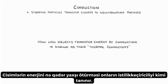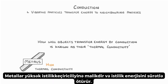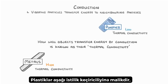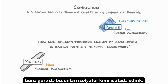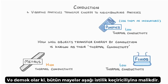Exactly how well objects transfer energy by conduction is known as their thermal conductivity. Metals have a high thermal conductivity and transfer heat energy rapidly, whereas plastics have a low thermal conductivity, which is why we use them as insulators. And pretty much all fluids have a low thermal conductivity.